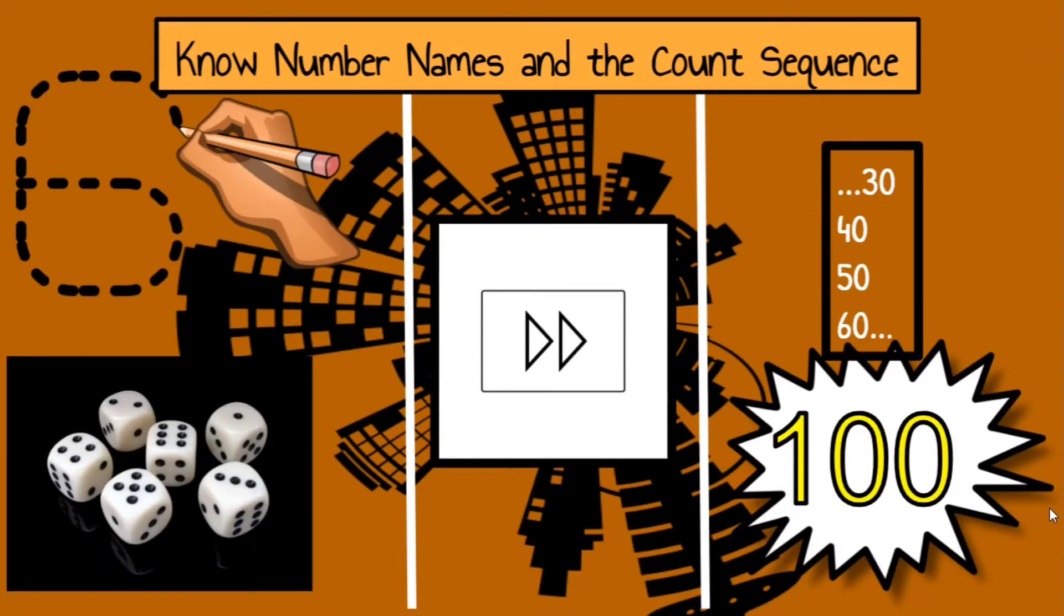Knowing number names and the count sequence is just that. The student knows that a number represents a certain amount. The student should be able to start counting not only from zero or one, but from any number on. And the child should be able to count by tens to a hundred or by ones.